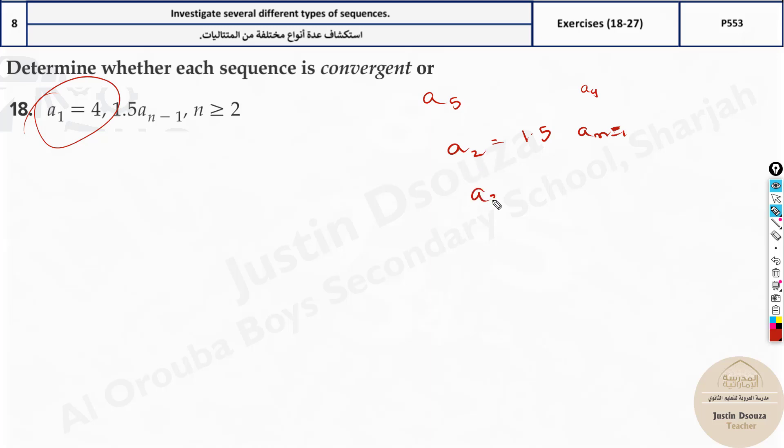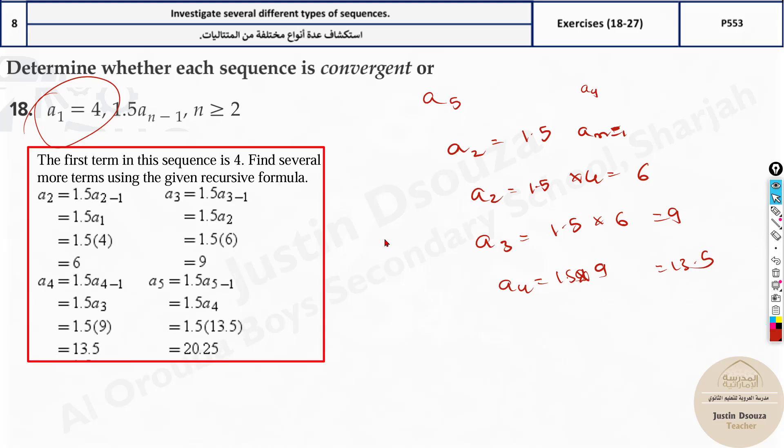What is A2? A2 equals 1.5 times A1. A1 is 4, so 4 times 1.5 will be 6. Same way we can do A3 where we need to do 1.5 times 6 because that is the previous term. It will be 9. A4 equals 9 times 1.5, which is 13.5. You keep on getting the values. You need to find about 4 to 5 terms to see the pattern.